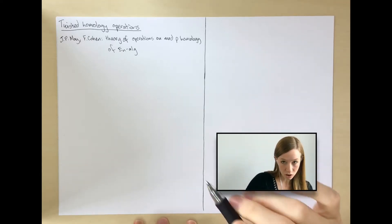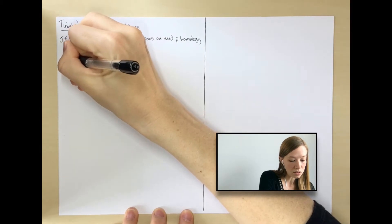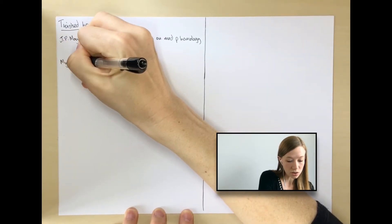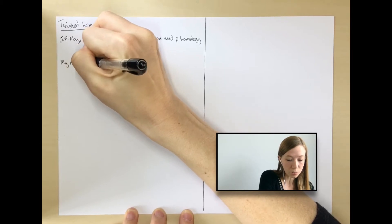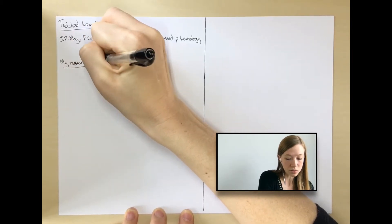That's for constant coefficients, and there are many settings in which twisted coefficients arise very naturally, and it's desirable to have a similar theory for twisted coefficients.